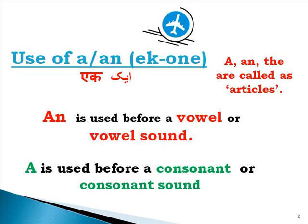Use of A: A and AN mean 'ek' (one) — whether it's one thing or one person. A, AN, and THE are called articles in English. We'll explain THE in another video; for now we'll learn the usage of A and AN. AN is used before a vowel or vowel sound, and A is used before a consonant or consonant sound. We'll do exercises to understand it in a better way.